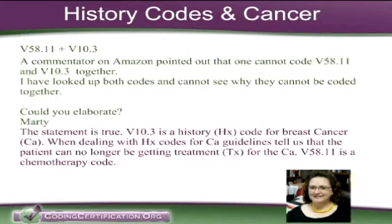Keep that in mind, and even in your code books it's a good idea to write, maybe next to your history code — those V10 codes — 'no longer getting treatment.' And even if a patient had breast cancer, was no longer getting treatment for that breast cancer — say that was 10 years ago — and then a year ago they found out they had lung cancer, that is a secondary cancer to the breast cancer, and you can no longer use a history code.